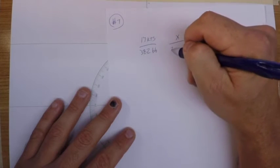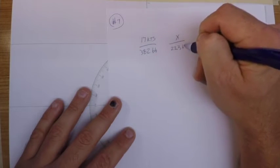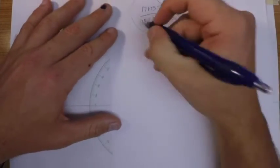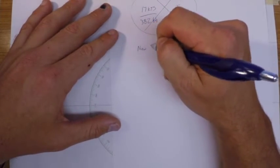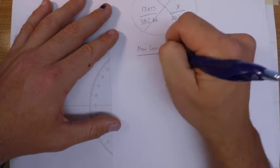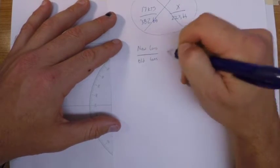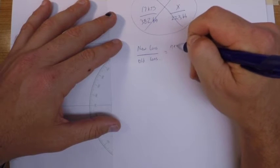So the formula for this is new consumption divided by the old consumption is equal to the new speed cubed divided by the old speed cubed.